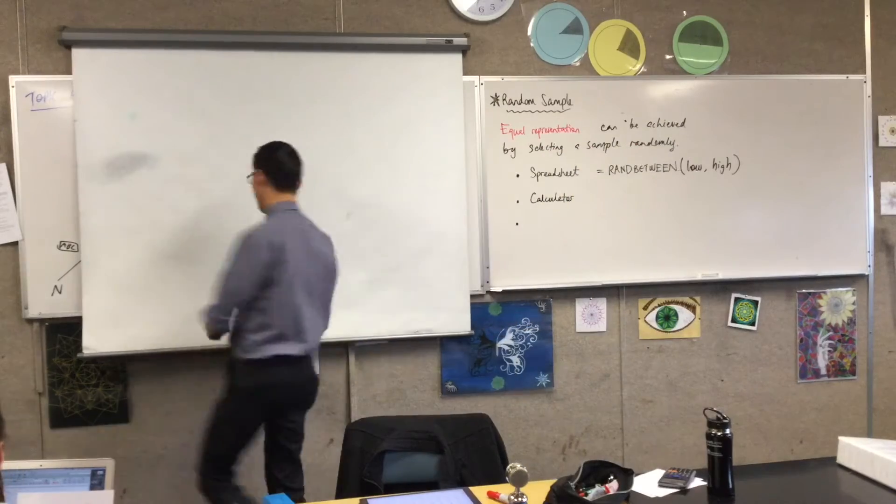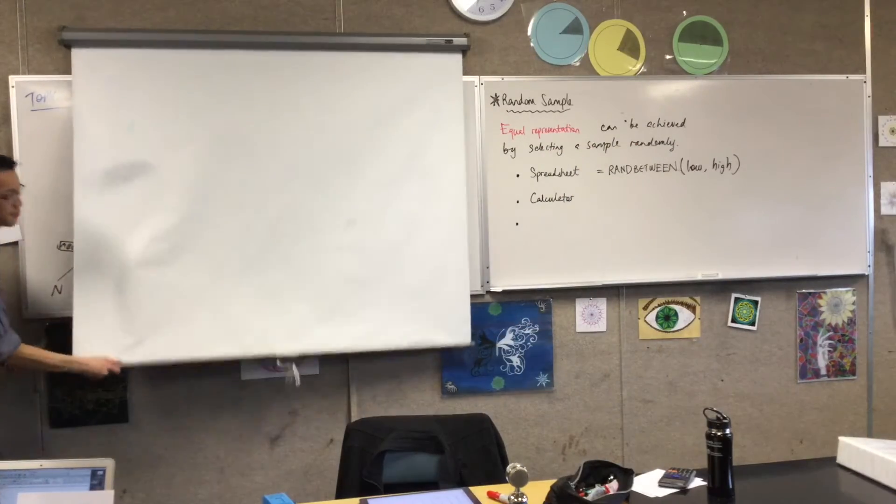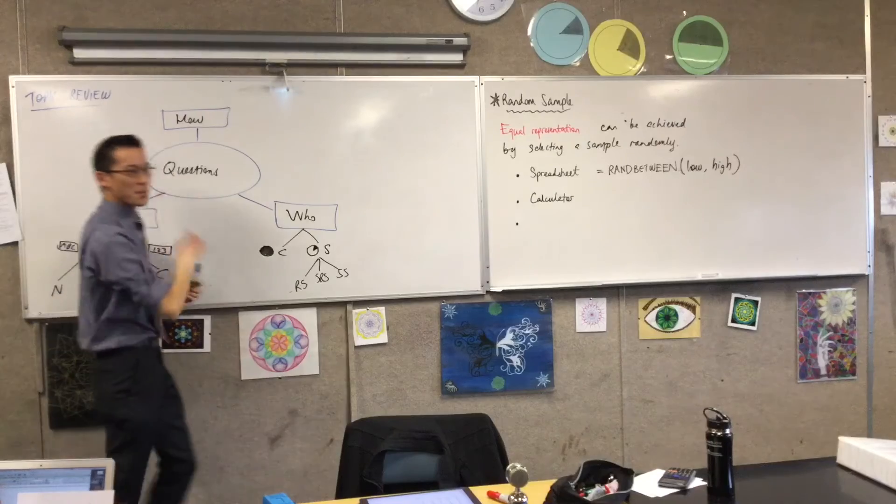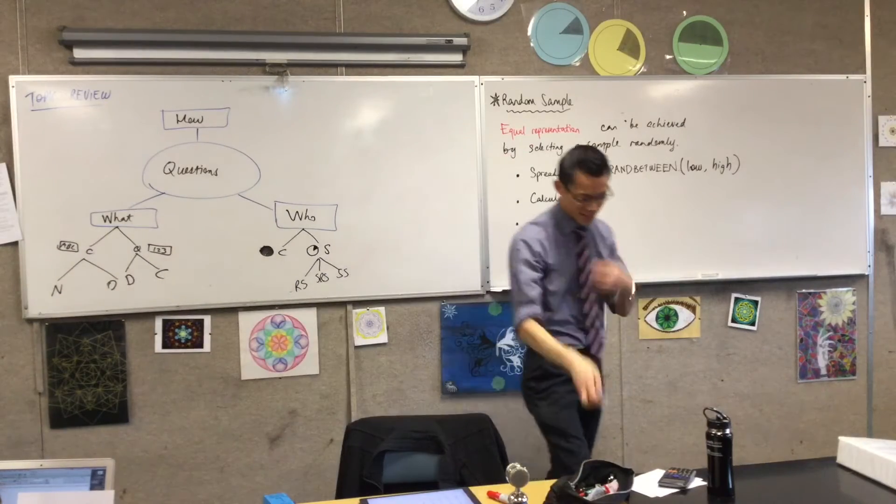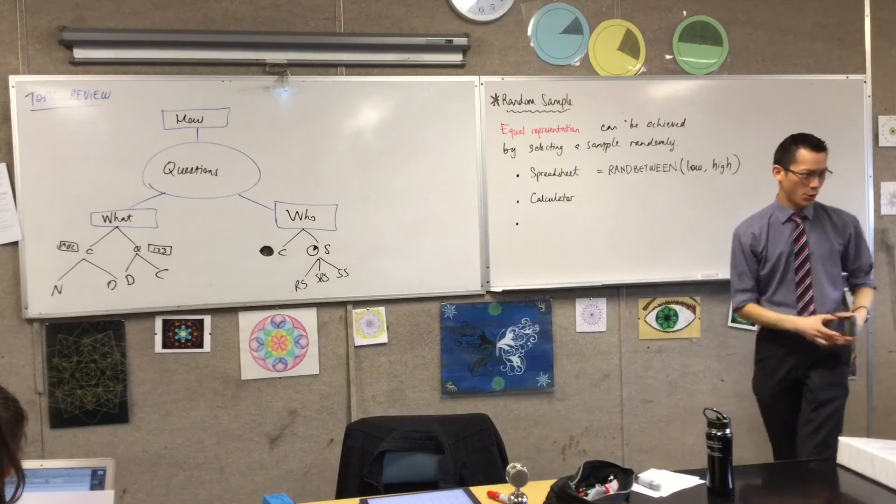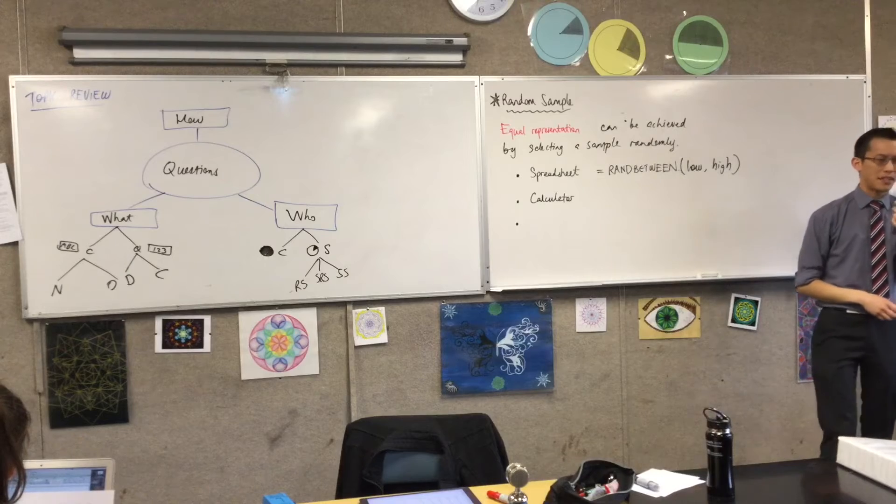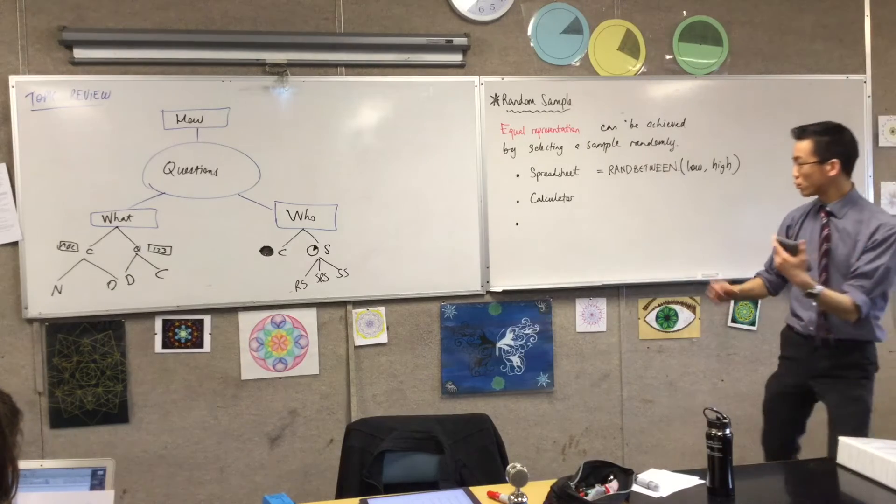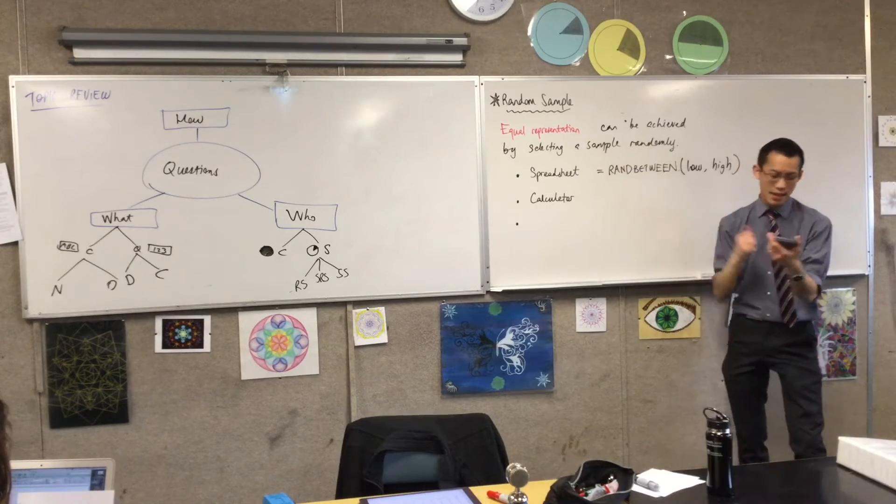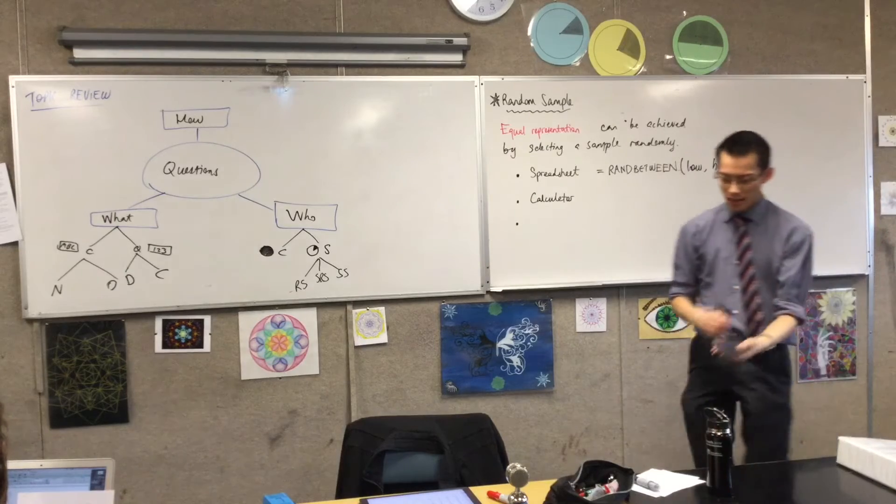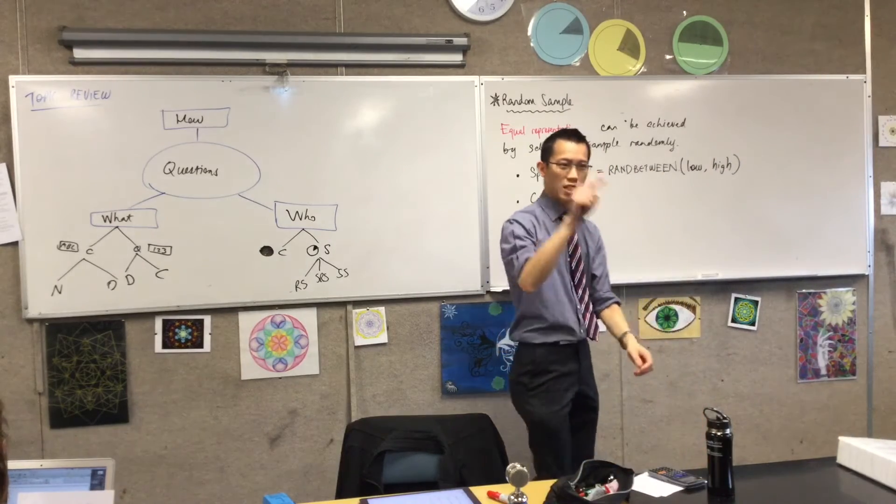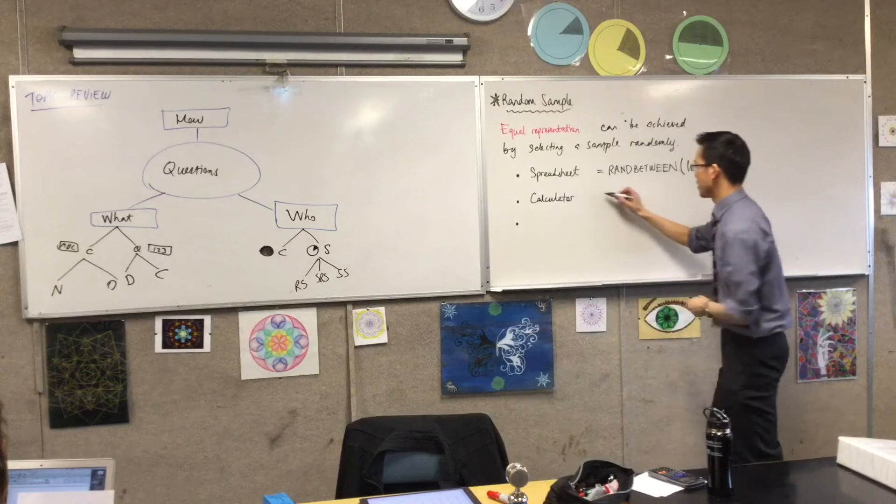Now, if you stare really hard at the buttons on your calculator and the small characters that are labeling above and below, I wonder if you can see something that might be useful to you that will do something similar to this. Now, depending on your calculator, if you look at the decimal point, my decimal point looks like this.